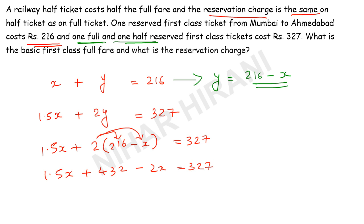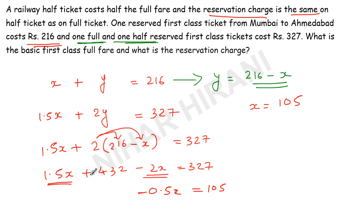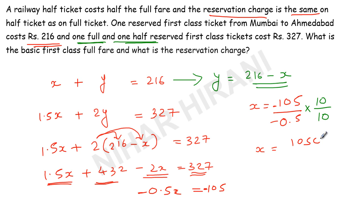Now simplifying the like terms: 1.5x minus 2x gives negative 0.5x. And 327 minus 432 gives negative 105. So negative 0.5x equals negative 105, which means x equals negative 105 divided by negative 0.5. The negatives cancel. To eliminate the decimal, I multiply numerator and denominator by 10, giving 1050 divided by 5, which equals 210. So the ticket price x is 210.